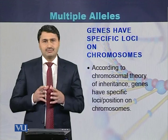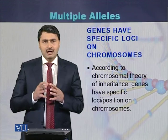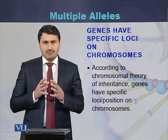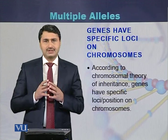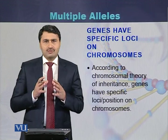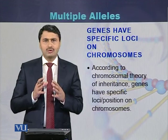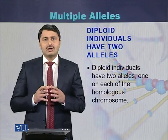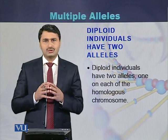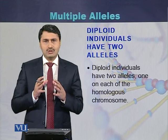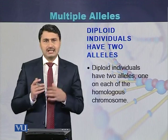According to the chromosomal theory of inheritance, there are homologous chromosomes. One comes from the father while the other comes from the mother. So in case of diploid individuals, there is a pair of chromosomes and one allele is present on each homologous chromosome, giving them two alleles — one maternal and one paternal.